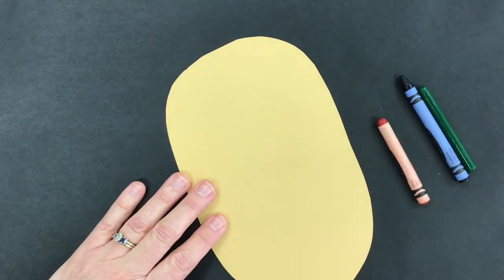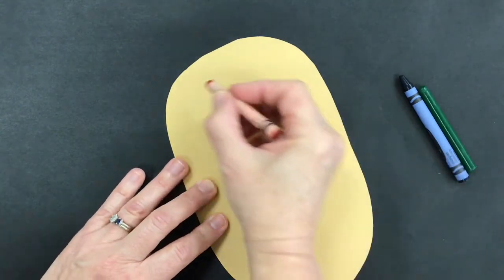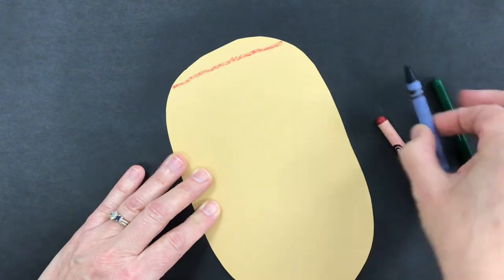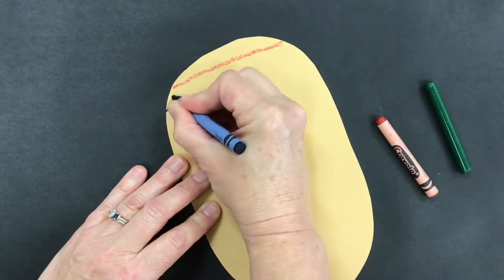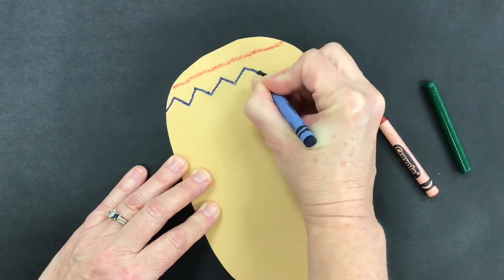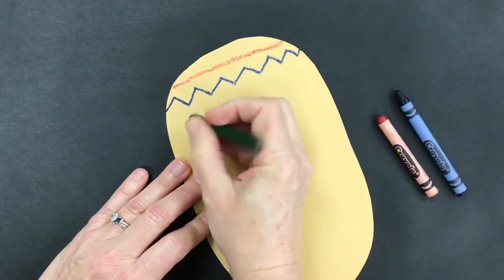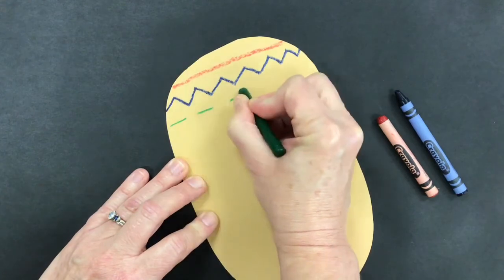Now you're gonna flip it onto the other side and you're gonna do that same pattern on this side because this is a blanket and we're pretending that this is wrapped all around our baby. So we want this blanket to be the same on both sides. Make sure that whatever pattern you did on the other side, you do on this side.